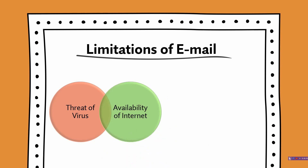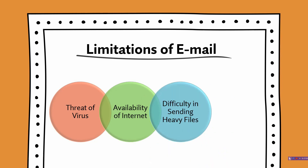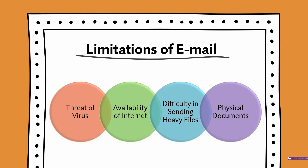Next is availability of internet. Sending and receiving emails is only possible when both the sender and the receiver have access to internet, which is not widespread in India compared to developed countries. Next is difficulty in sending heavy files — it becomes very difficult to send heavy or too many files through email as they need to be sent separately or through a different mode, which is very time consuming. The last limitation is physical documents: it is not possible to send physical documents through email which are required in hard copy, such as legal or ownership documents. So these are the four limitations of email: threat of virus, availability of internet, difficulty in sending heavy files, and physical documents.